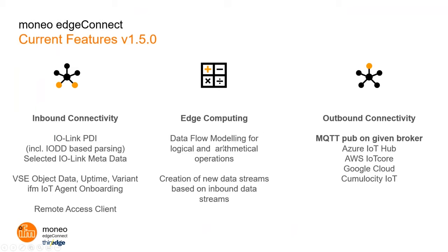We already have the data flow modeling capability. More importantly, for outbound connectivity we already provide an MQTT client that enables the user to pick and choose particular data sources and data streams and publish messages to a given broker. We also have included four cloud connectors to enable the user to onboard the edge device to those particular cloud platforms.